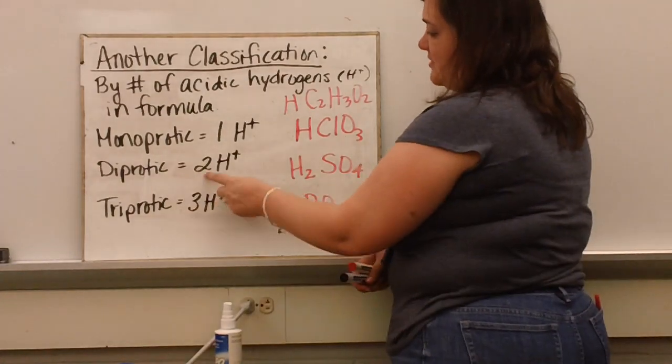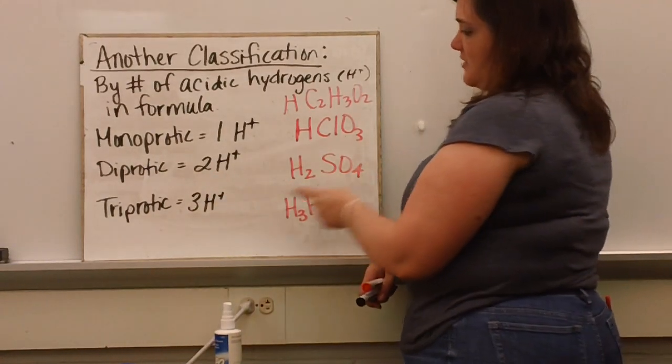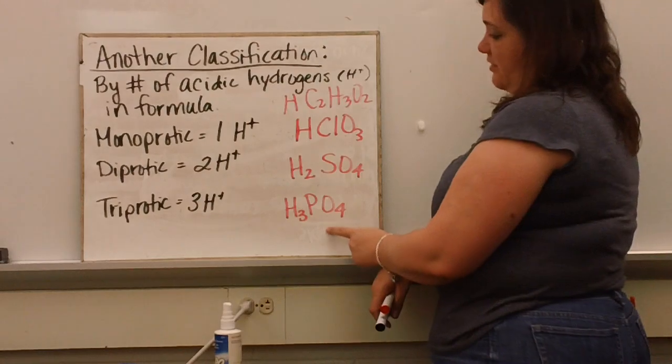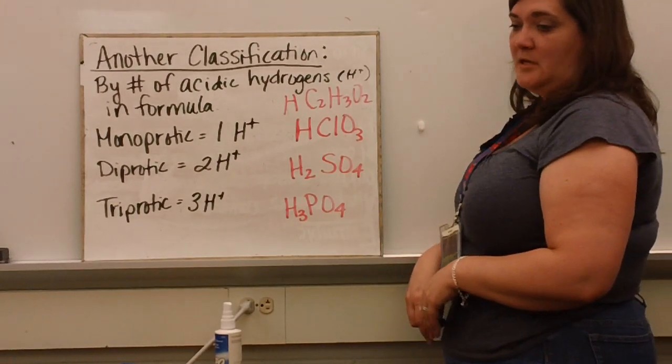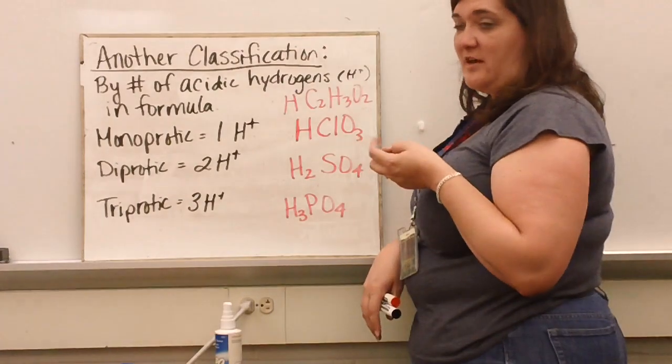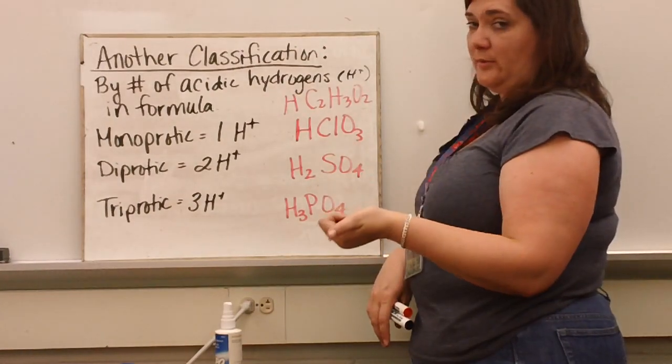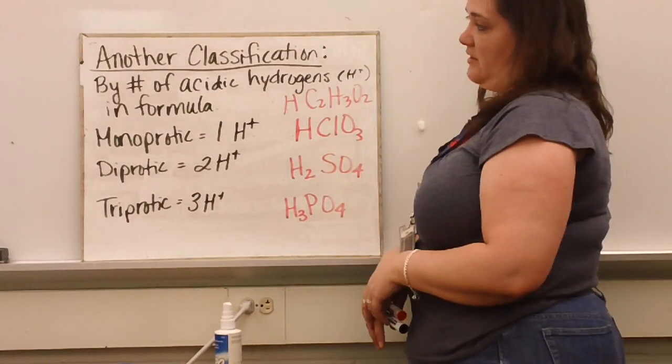A diprotic acid has two hydrogens, such as sulfuric acid. A triprotic acid has three hydrogens, like phosphoric acid. So those are basically the two ways we can classify things based on whether they're strong or weak and how many hydrogen ions they have.